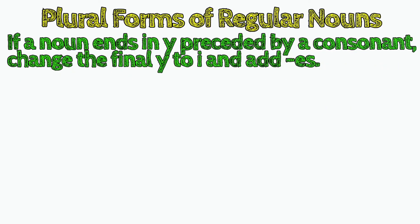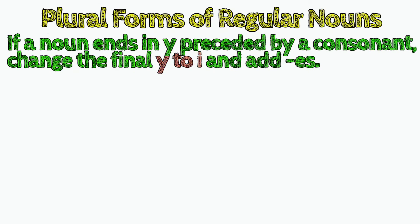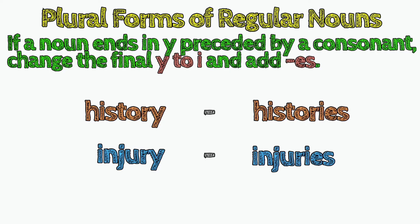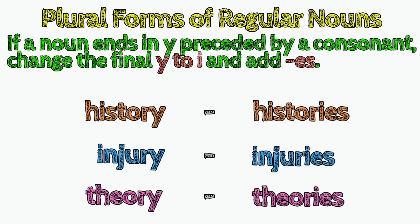Fifth, if a noun ends in Y preceded by a consonant, change the final Y to I and add ES. Examples: history, histories; injury, injuries.